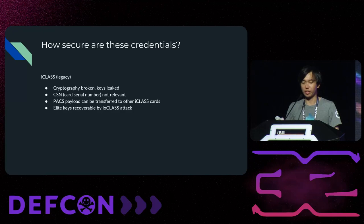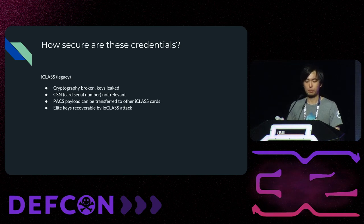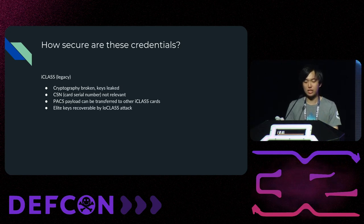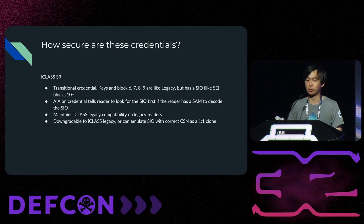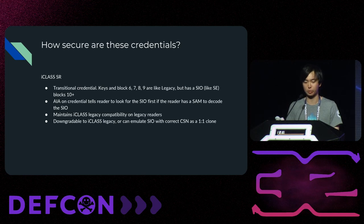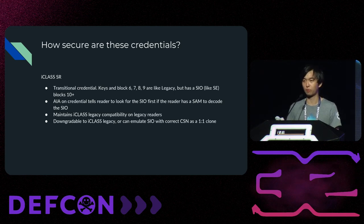How secure are each of these HID credentials? Starting with the least secure — iClass Legacy — the cryptography is completely broken, keys are leaked, the card serial number is not relevant in the PACS payload, which means cloning is extremely trivial, and elite keys are recoverable by Low Class attack. The PACS payload is easily transferable by copying blocks 6 through 9 to another card. iClass SR is a transitional credential where the Application Instruction Area on the card tells the reader that it has a Secure Identity Object. This is good for transitioning between buildings that have SE secure readers and legacy readers. These are easily downgradable to iClass Legacy, or you can emulate the credential with the correct card serial number for a complete clone.